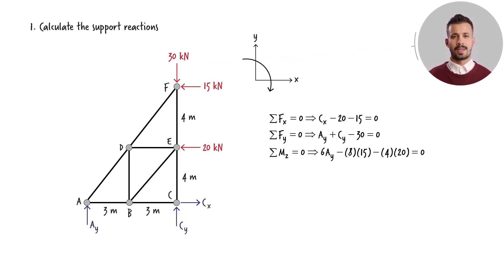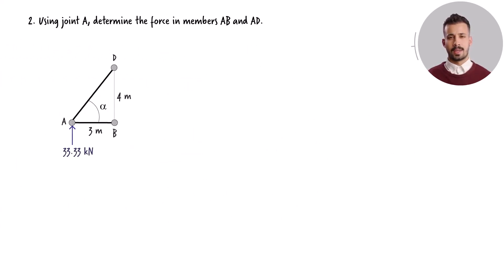Solving these three equations for the unknown forces, we get the results. Let's revise the truss's free-body diagram to include the magnitudes of the support reaction forces. We can now proceed to use the equilibrium equations on the joints of the truss.